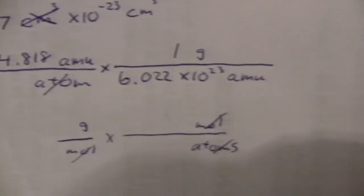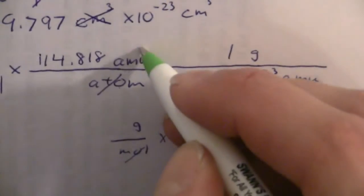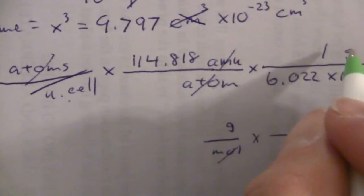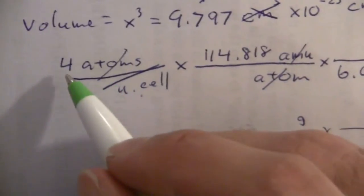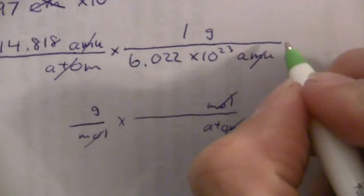So here my amu cancel, and I'm left with grams. So 4 times 114.8 divided by 6.02 times 10 to the 23rd.